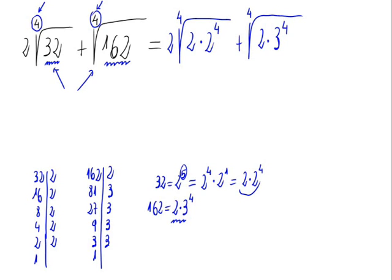Inside of both roots we have products with powers that are raised to exponent 4, so we can get them out of the roots. In this case we can take the 2 and the 3 out of the roots, but the exponent goes away of course.